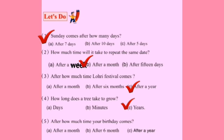Number five: After how much time does your birthday come? A. After a month. B. After 6 months. C. After a year. Dear students, your birthday comes after a year. We will tick on option C — after a year.